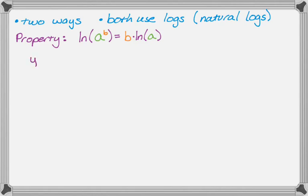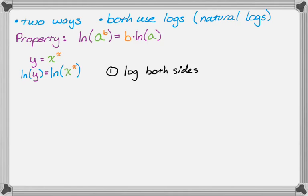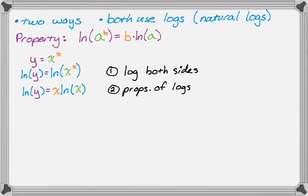So let's take a look. We're going to start with y equals x to the x. What I'm going to do is take the natural log of both sides. I get natural log of y equals natural log of x to the x. Now I'm going to use the property — the x exponent becomes a coefficient — so natural log of y equals x times natural log of x.